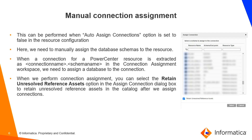Manual connection assignment means manually assigning the database schemas to the source connections of the resource. We can configure this by setting the auto assign connections option to false under the resource configuration. We can manually assign or unassign connections, and then the status of the connection changes to in progress. We need to refresh the connection assignment workspace to view the latest status. Unresolved reference assets include tables, columns, and any other assets that are not present in the actual resource but that we need to retain to view the complete lineage. The unresolved reference assets appear under the resource to which the connection assignment is performed for the reference resource.